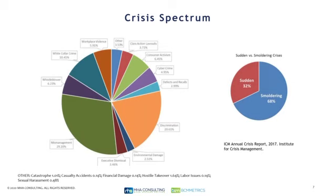Just a couple of things on risk, because it's the underlying issue to everything we're going to discuss. The crises and issues we have go across the board. One of the most important things to remember when doing risk assessments is that the biggest, most impactful and most frequent issues are those we call 'smoldering' — they've been going on, people know something's happening, but they've been ignored or hoped to go away, as opposed to sudden types of issues.